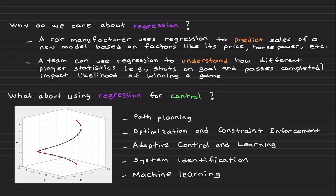Actually, just before starting these lecture series, I finished a research paper which is using regression. So in the context of control theory, we use regression for path planning, for optimization and constraint enforcement. It has applications to adaptive control and learning, system identification, and machine learning tools that are used in control.